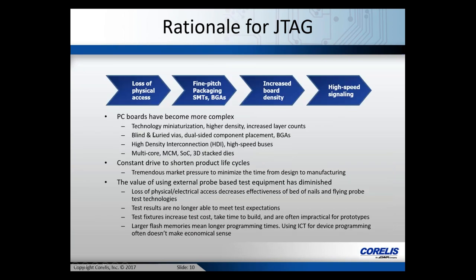Loss of physical access results from packaging restrictions, increased board density, and high-speed signals. Additional complexities include technology miniaturization, dual-sided component placement, blind and buried vias, multi-core chips, multi-chip modules, system-on-chip components, and 3D stacked dies. These factors are making physical access increasingly problematic. There's also a constant drive to shorten product life cycles, and because you can no longer utilize probes to access test points, the value of external probe-based test equipment is diminishing.